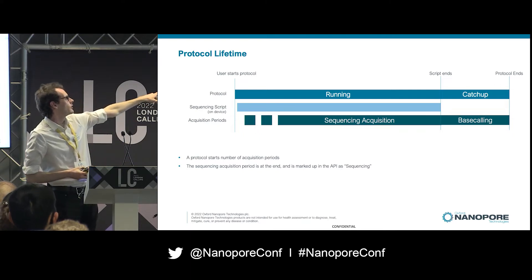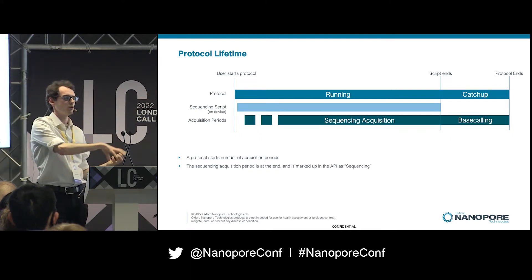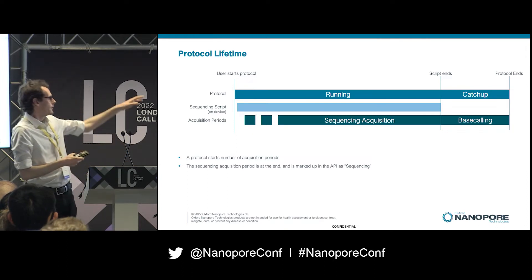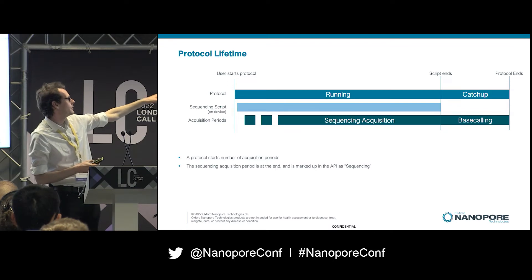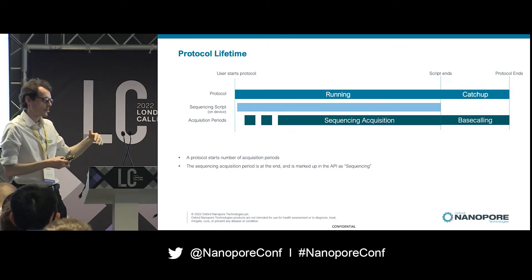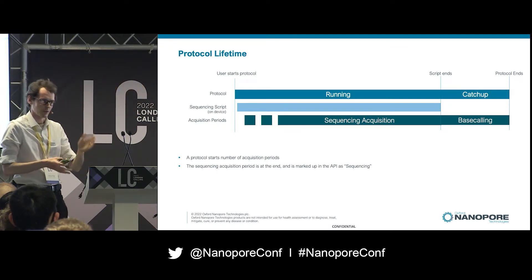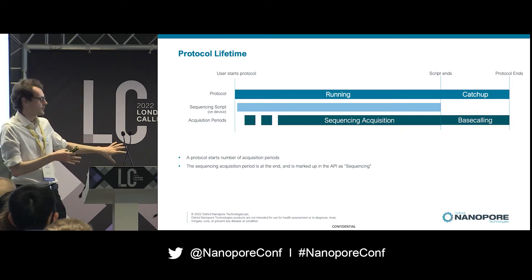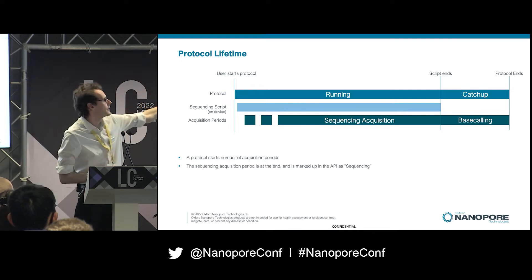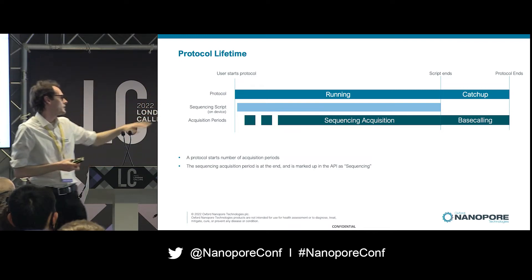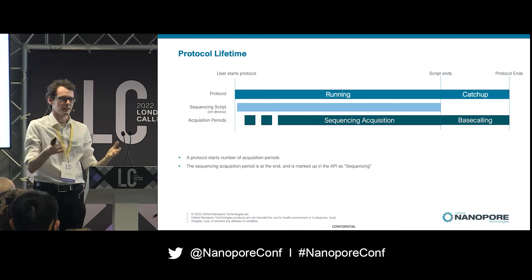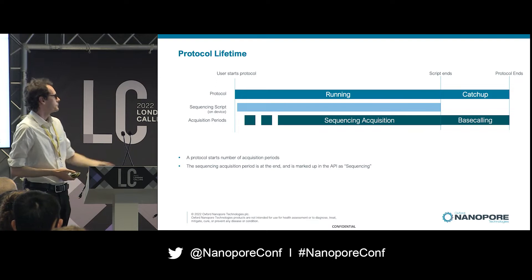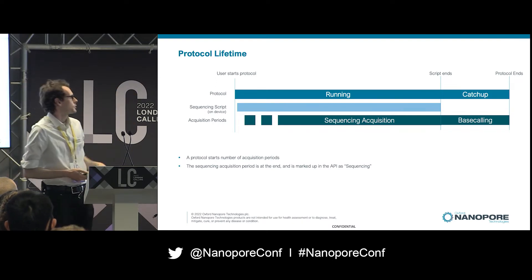A quick note on acquisitions, which is what we internally call the process of pulling data off the sequencer. There are several in the bar shown. When you're running a sequencing run, we start and stop several acquisitions — we use the first few to calibrate and organize the device, so they're not interesting for sequencing. The one you'd be interested in is a long one at the end, which in the API is marked as a sequencing run and flagged as having interesting data. So that's what you want to query.